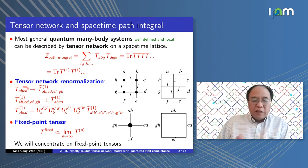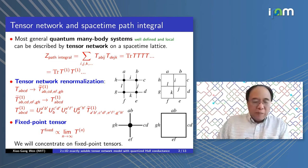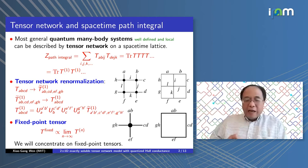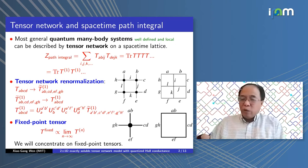We can repeat these steps and at the end we get a fixed point tensor. In this talk I will mostly concentrate on fixed point tensors because they have some very nice properties. To discuss tensor network renormalization in a more general setting, I will use a dual picture.